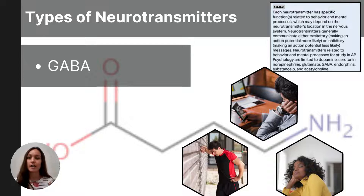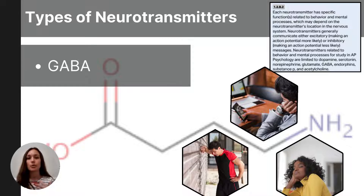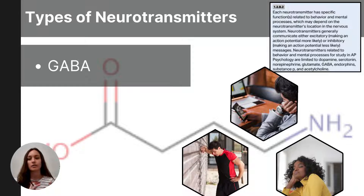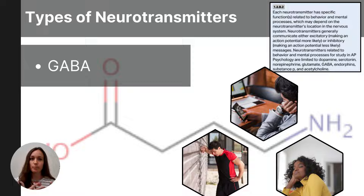The first is called GABA, which stands for gamma-aminobutyric acid, and it's an inhibitory neurotransmitter. It helps reduce neural activity and promotes calmness. GABA slows the nervous system, prevents the over-excitation of neurons, and helps regulate anxiety, stress, and overall brain activity. Too much GABA can lead to excessive drowsiness or sedation. Too little GABA can result in anxiety, restlessness, insomnia, or even conditions like tremors or seizures when neurons become overly excited.